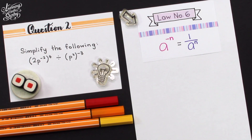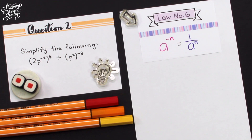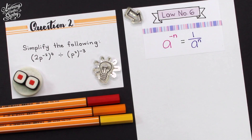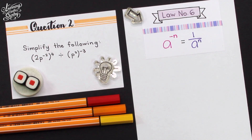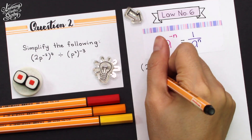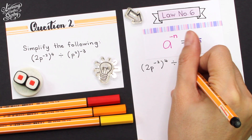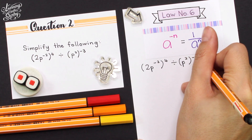For question number 2, simplify the following: 2p to the power of negative 2, holding in bracket to the power of 4, divided by p to the power of 2 holding in bracket to the power of negative 3. To solve this question, we're going to use law number 6, which is negative indices: a to the power of negative n equals 1 over a to the power of n. First of all, I'm going to write down the question given.